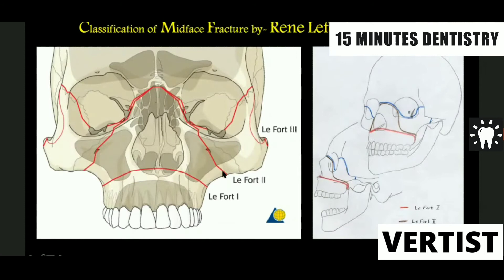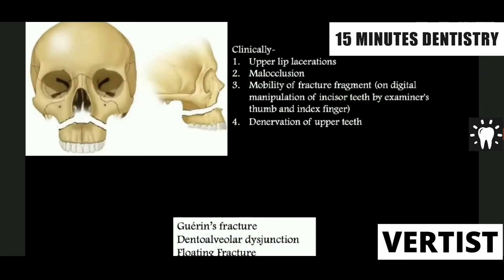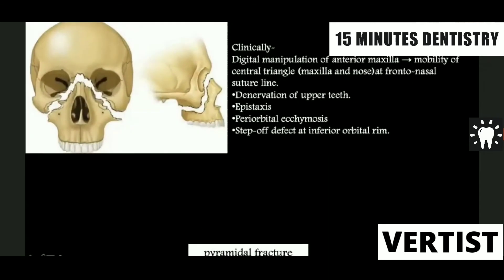One fracture line passes from the piriform aperture going backwards, fracturing the pterygoid plate at the upper level — that is Le Fort 2. Then Le Fort 3 starts from the frontonasal junction, fracturing the ethmoid, sphenoid, and then the zygoma. Le Fort 1 is called a floating maxilla or Guérin fracture, where the pterygoid is fractured at a lower level. Le Fort 2 is the pyramidal fracture.